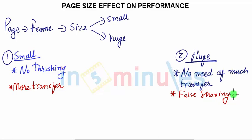The question simply remains: we cannot have huge because of thrashing. We cannot have small because of more transfer. What is advisable? The answer to that is the mid option.